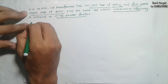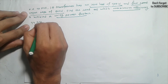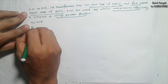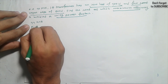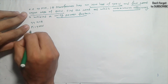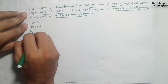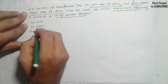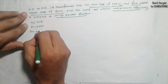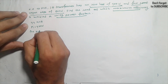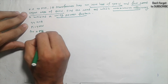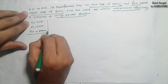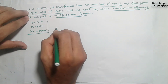We have iron loss PI = 400 W, and full load copper loss PCU = 800 W.